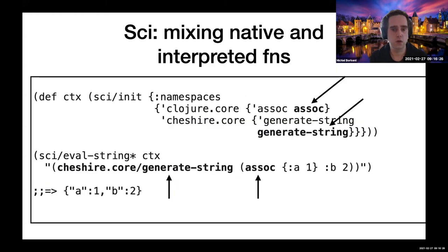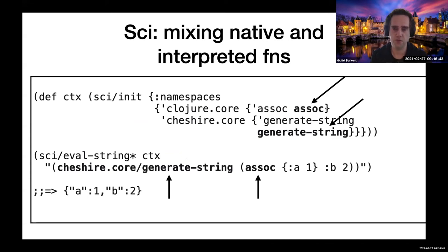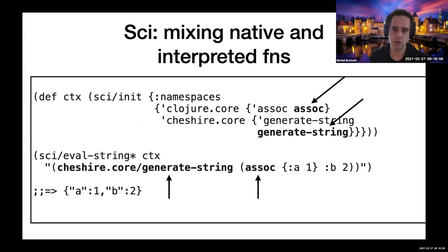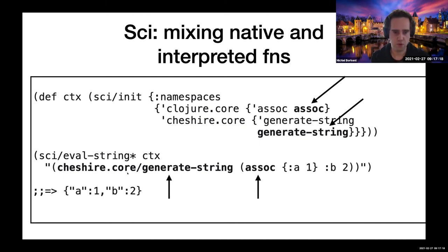You can hook in existing functions from Clojure itself, or libraries provided in Babashka. Here we have a function called 'assoc', which means adding something to a map. This function is called from within a string, but it maps to the function provided in the configuration — it's looked up in the analyzer and then called directly. Similarly for the 'generate-string' function, which comes from a JSON library called Cheshire. Having a lot of natively compiled functions makes the performance relatively fast, because we don't have to do any interpretation on those functions.